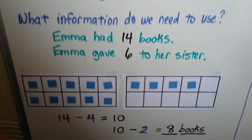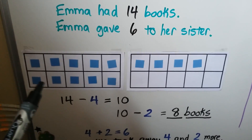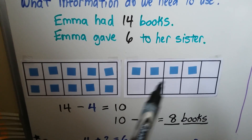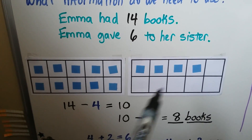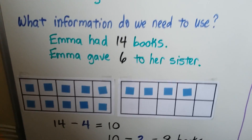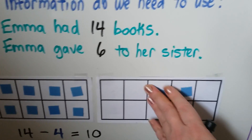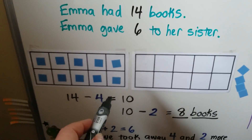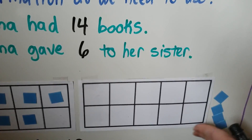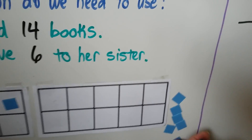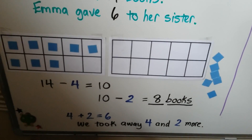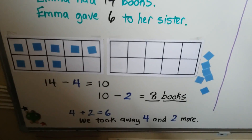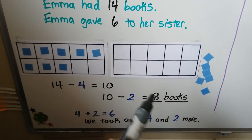We can use 10 frames. We can make 14 counters for the 14 books. And we can take these 4 away so that we have 10. We can take 2 more away so that we've taken away 6 in all. 10 minus the 2 is 8 books. So 14 minus 6 is equal to 8.